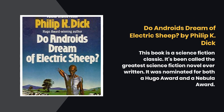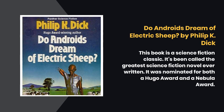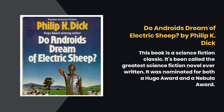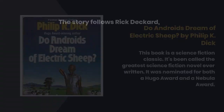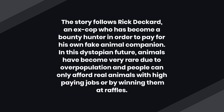Do Androids Dream of Electric Sheep? by Philip K. Dick. This book is a science fiction classic — it's been called the greatest science fiction novel ever written and was nominated for both a Hugo Award and a Nebula Award. The story follows Rick Deckard, an ex-cop who has become a bounty hunter in order to pay for his own fake animal companion. In this dystopian future, animals have become very rare due to overpopulation, and people can only afford real animals with high-paying jobs or by winning them at raffles.